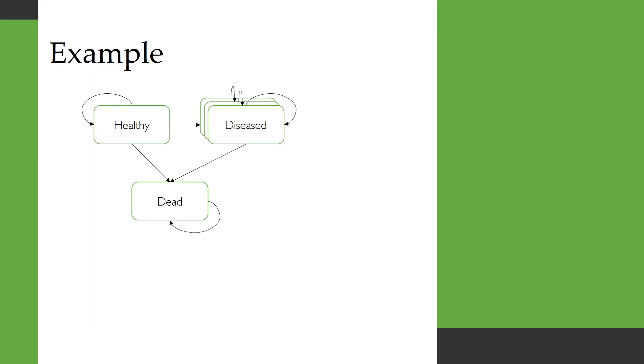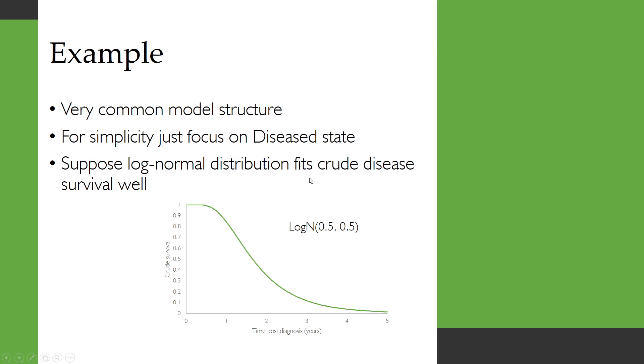So here's an example of a model with tunnel states. We've got a healthy state, this diseased state here which has tunnel states denoted there, and then we have an absorbing state which is death. This is a very common model structure and for now we're just going to focus on that diseased state which had the tunnel states.